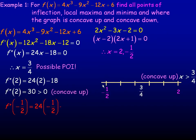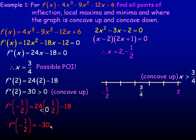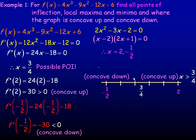Now we check at negative 1 half — you can check any number below 3 quarters, but I'll use negative 1 half since it's one of our critical points. Putting negative 1 half into the second derivative gives negative 12 minus 18, which is negative 30. The fact that it's negative — less than 0 — tells us the graph is concave down to the left of 3 quarters. So the graph is concave down at negative 1 half, making it a local maximum point. And the graph is concave up at 2, making it a local minimum point.